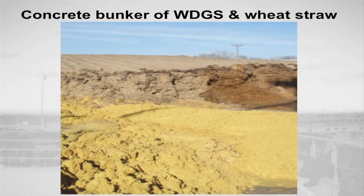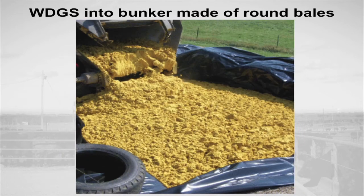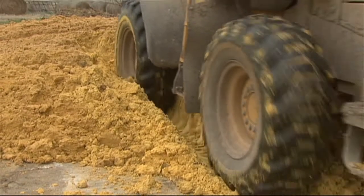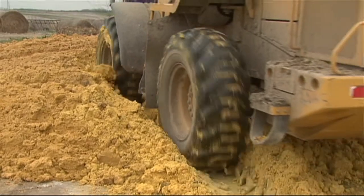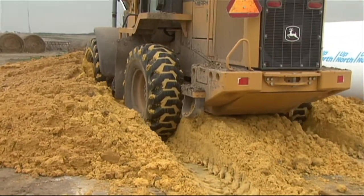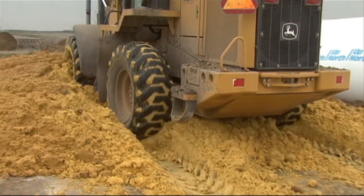Producers should take many factors into account when considering storing ethanol co-products by mixing with forages. The primary reason for incorporating forages is to add bulk and help dry the mixture for compaction and storage. Wet distillers grains plus solubles and condensed corn distiller solubles will not compact during storage without the addition of forages.